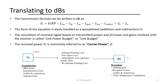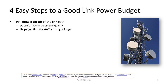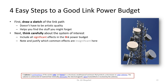The received power is commonly referred to as the carrier power. Here are four easy steps for good link budget analysis. First, draw and sketch the link path — it doesn't have to be artistic, just like my previous example. This will help you find what you're looking for. Read the statement from your manager or boss and don't forget any of the losses — think carefully and include all significant effects on the link budget.